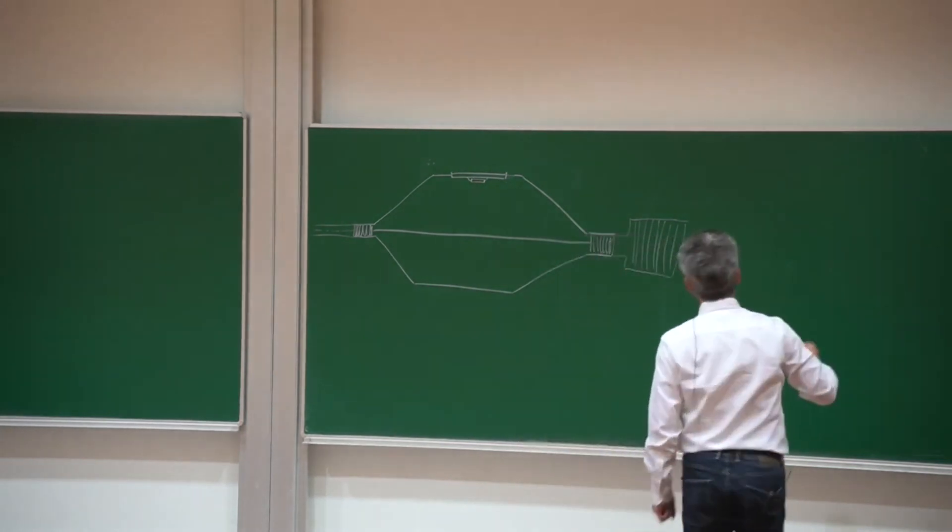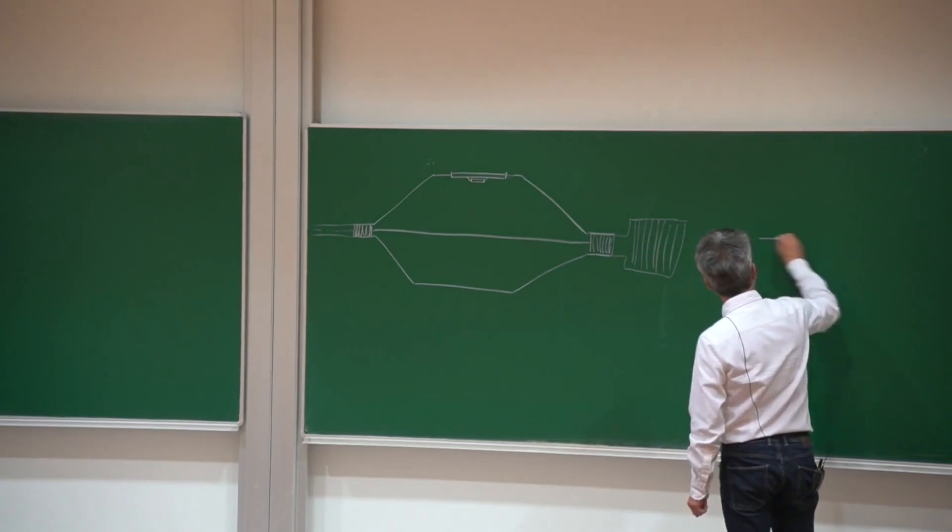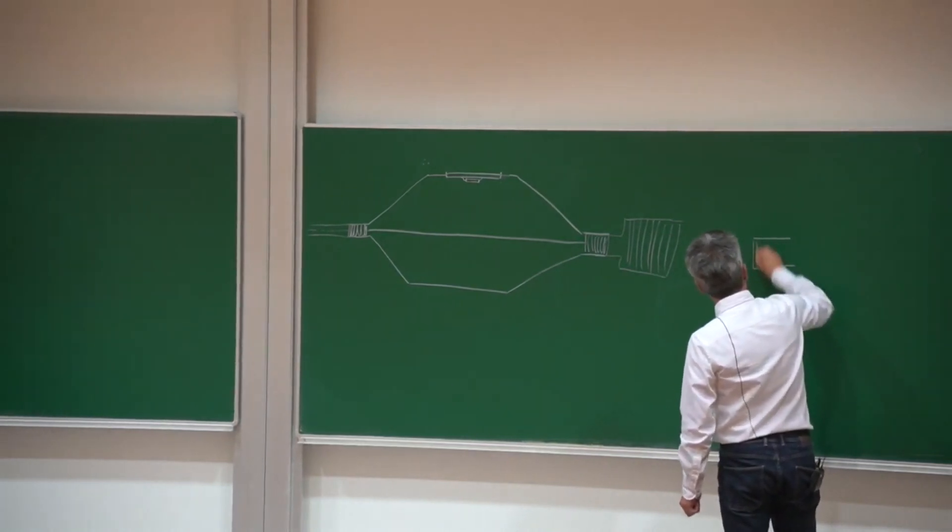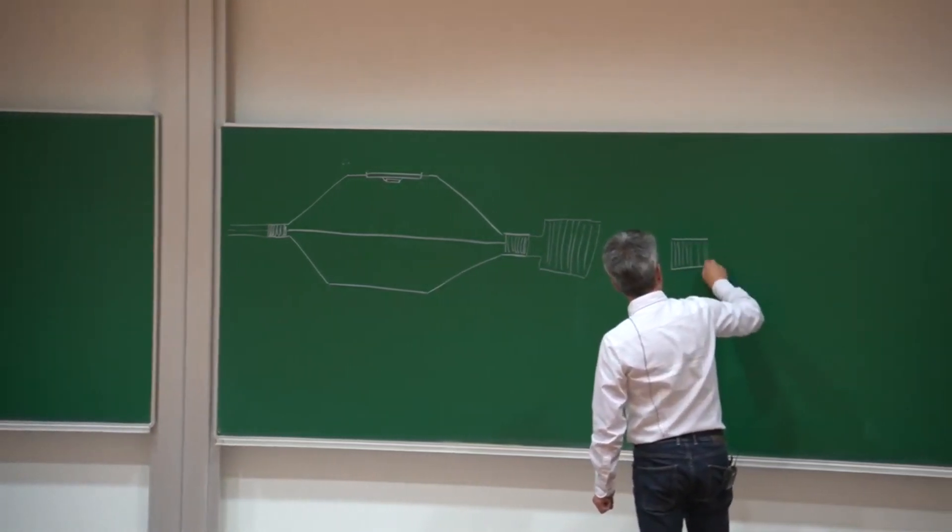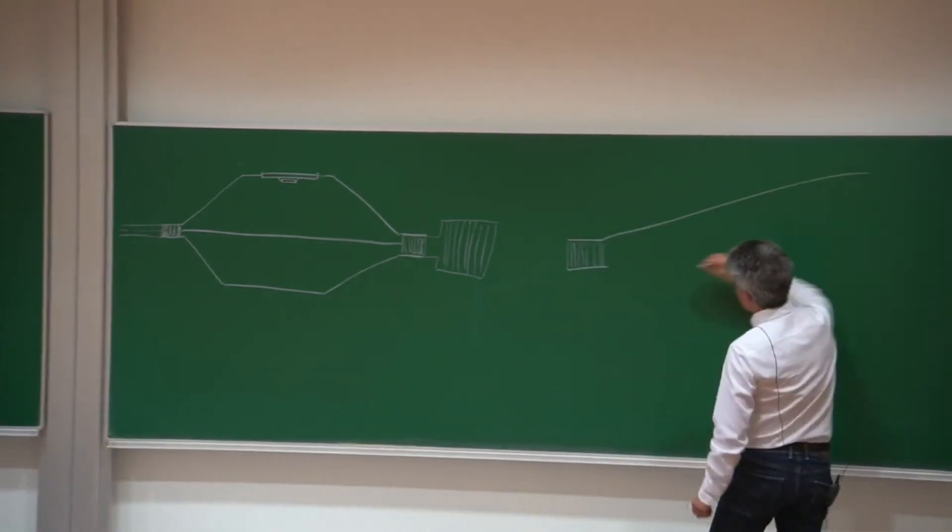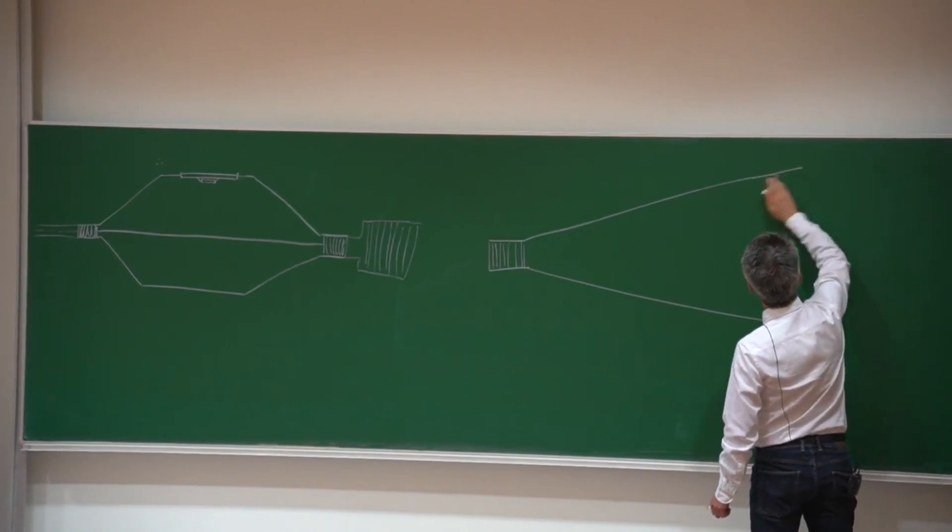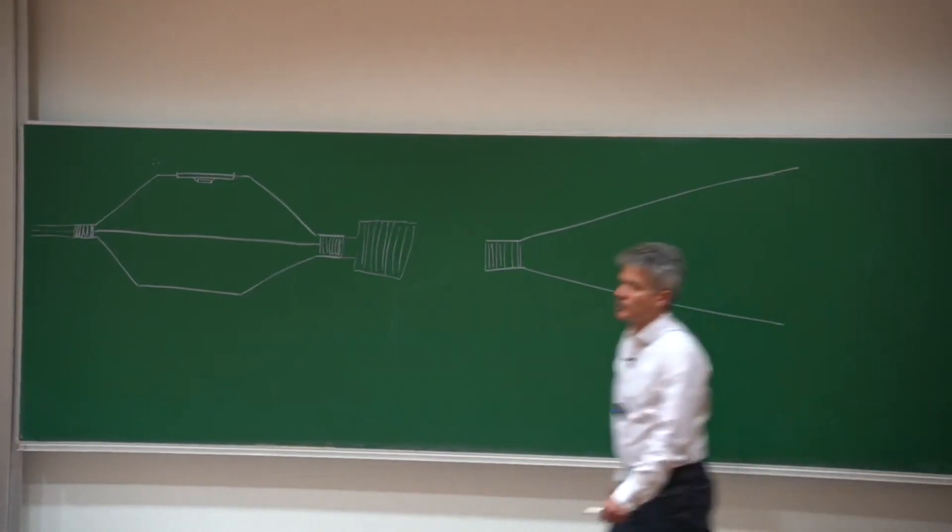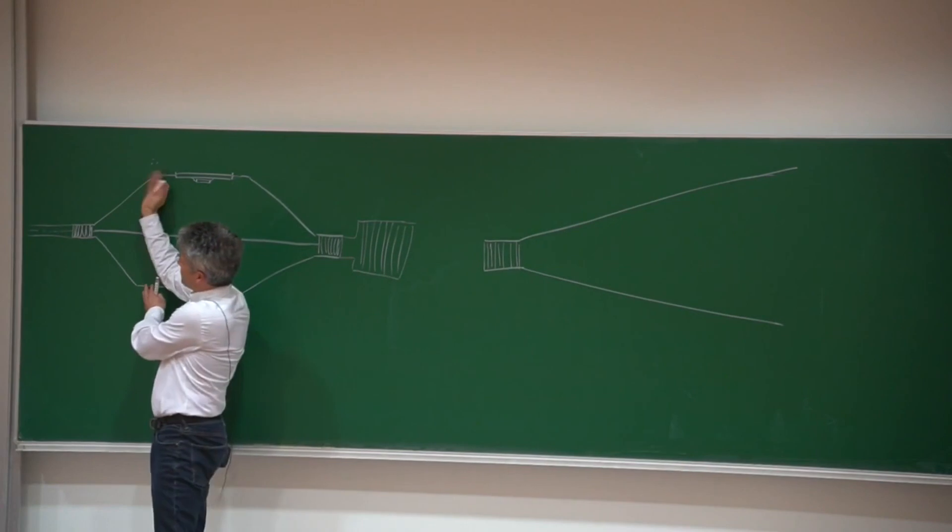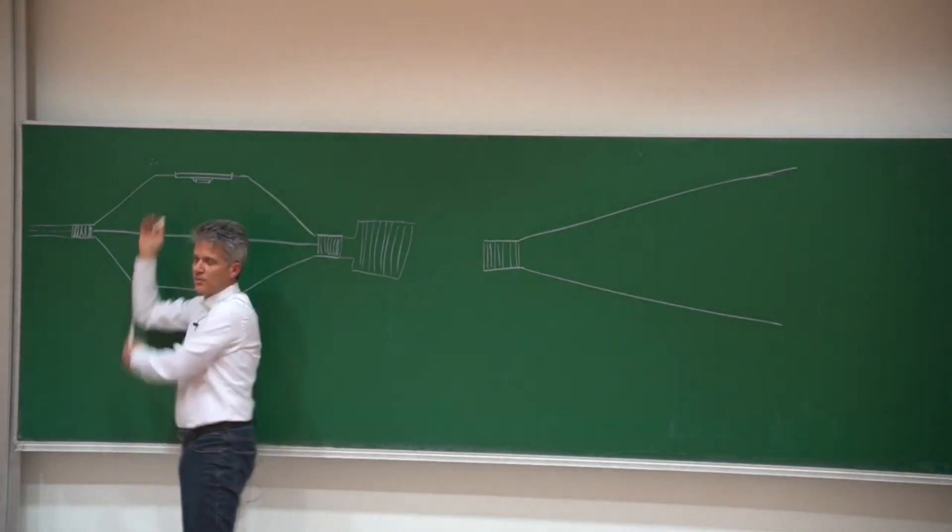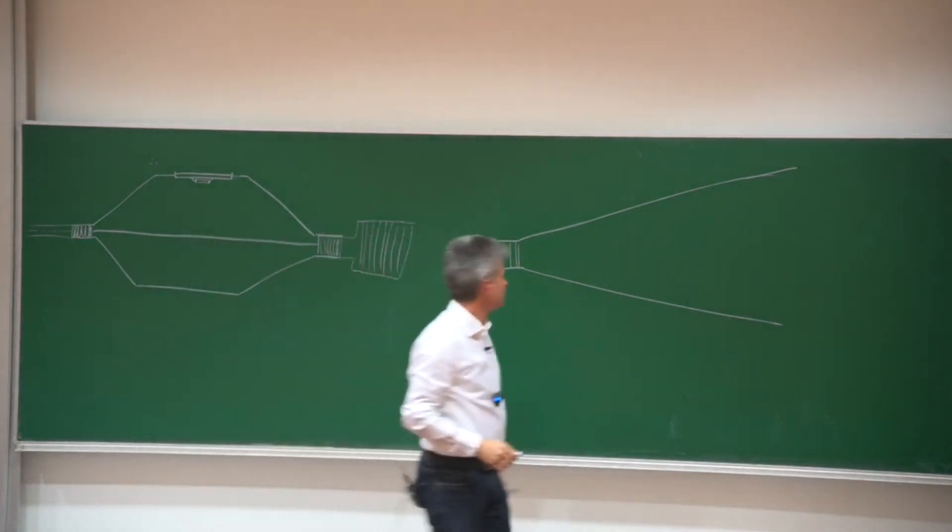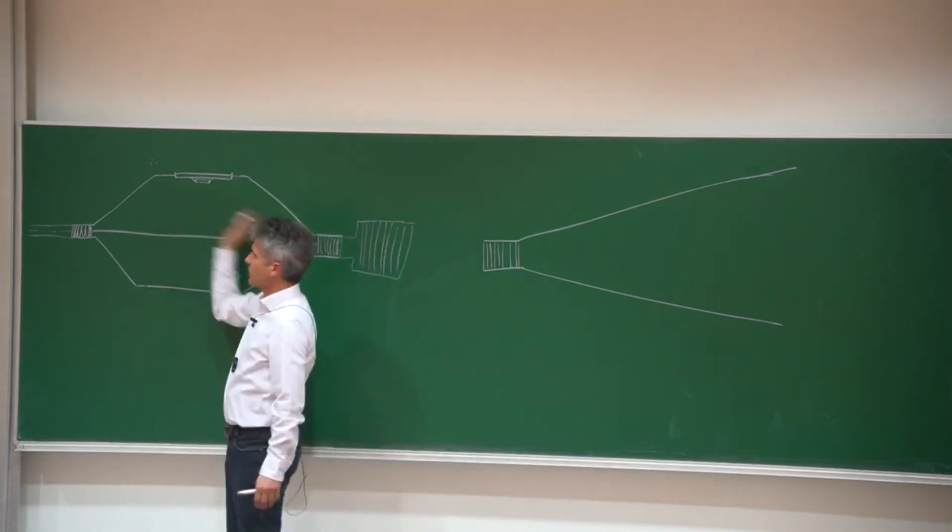The G-TEM cell looks a little bit different, so we also have a connector. But the shape, as I said, in this case, looks like this. So it only has more or less the first part of the DEM cell. And the remaining part here is not present anymore.